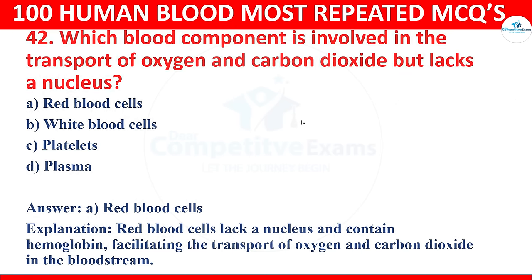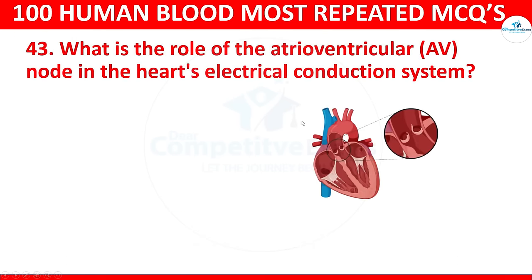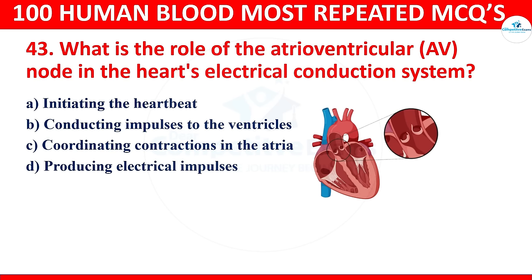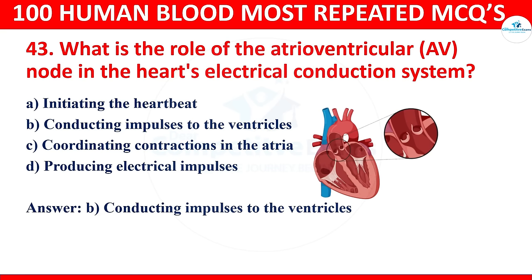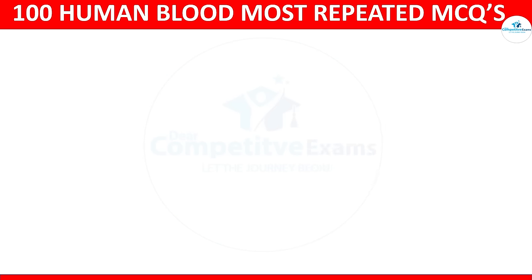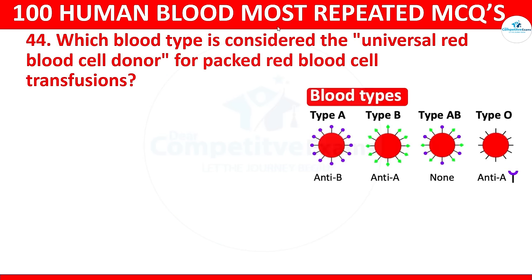Question 43: What is the role of the atrioventricular (AV) node in the heart's electrical conduction system? Options: initiating the heartbeat, conducting impulses to the ventricles, coordinating contraction in the atria, or reducing electrical impulses. The correct answer is conducting impulses to the ventricles. The AV node conducts electrical impulses from the atria to the ventricles, regulating the sequence of contraction in the heart.